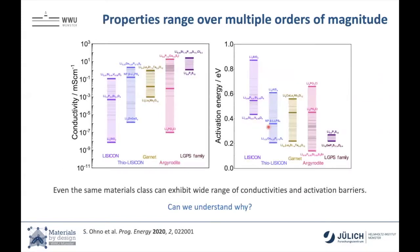What my group mostly does is try to understand ion transport in materials and push them. Here's an overview of different materials classes: conductivity on the left, activation barriers on the right. In the so-called argyrodite class, there's a large spread of ionic conductivity of orders of magnitude within the same structural family. This tells us there is a lot we need to understand about how compositions and structure affect ion transport and how we may be able to push those values.